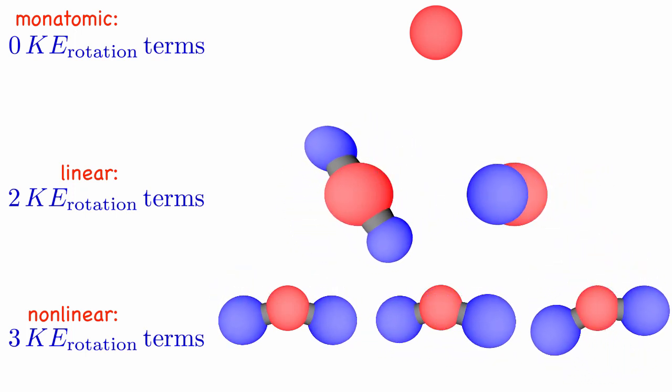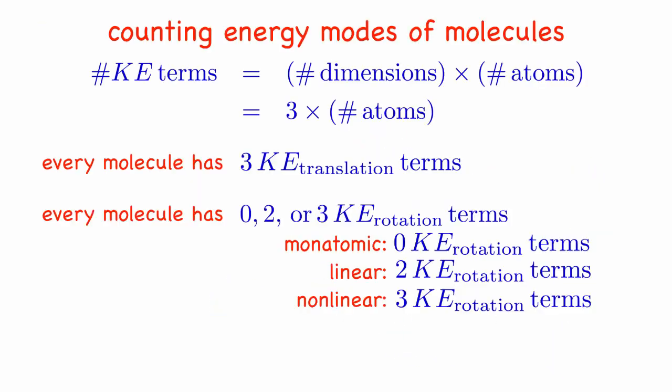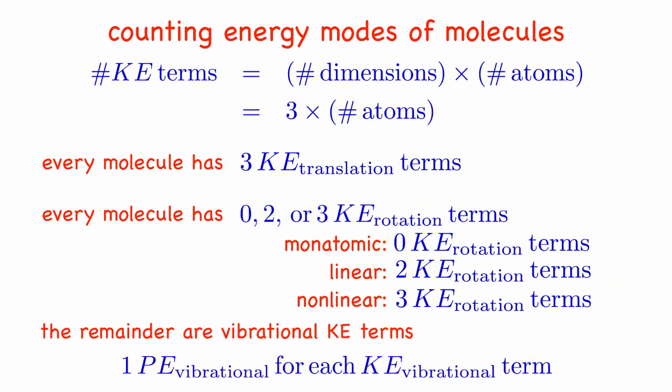Now we know the total number of kinetic energy terms, the number of translational kinetic terms, and the number of rotational kinetic terms. If the number of translational and rotational kinetic terms don't add up to the full total, then the remaining kinetic terms must be vibrational kinetic terms.